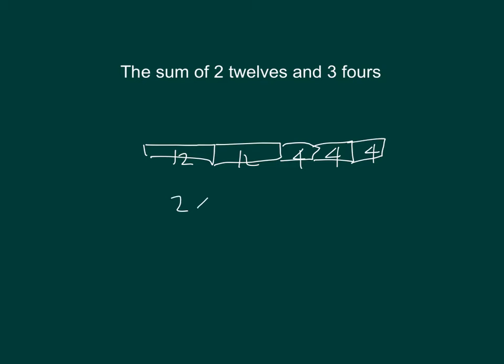So that's 2 times 12 plus 3 times 4. 2 times 12 is 24. 3 times 4 is 12. Adding them together, this evaluates to 36.